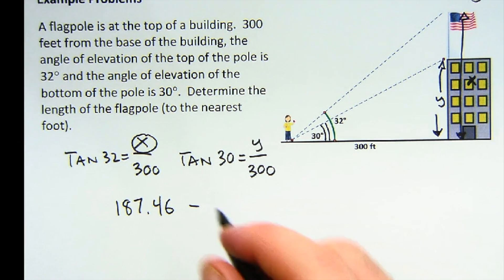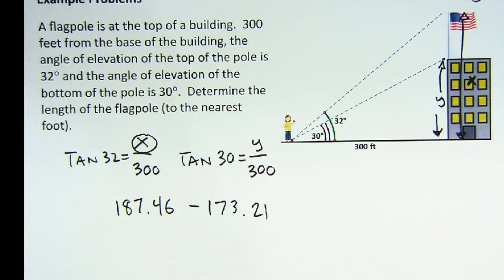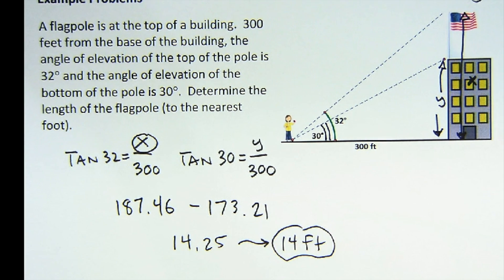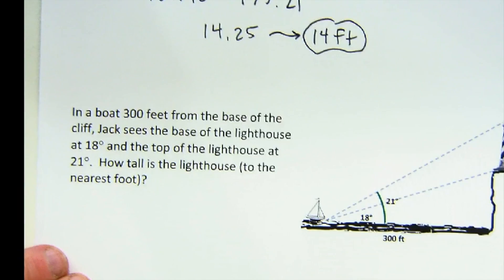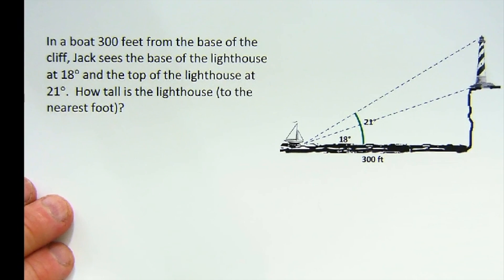And then we're going to subtract the two items and we find out that the flagpole is 14.25, and they ask us for the nearest foot. So a 14 foot flagpole is what we're looking at. Nice little problem there. This is the same situation. I'll set it up but not solve it just for time.